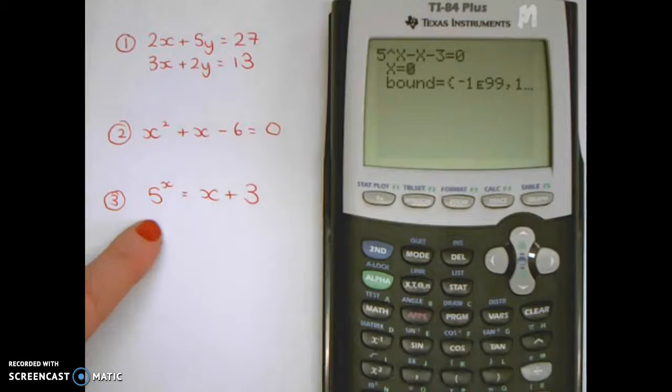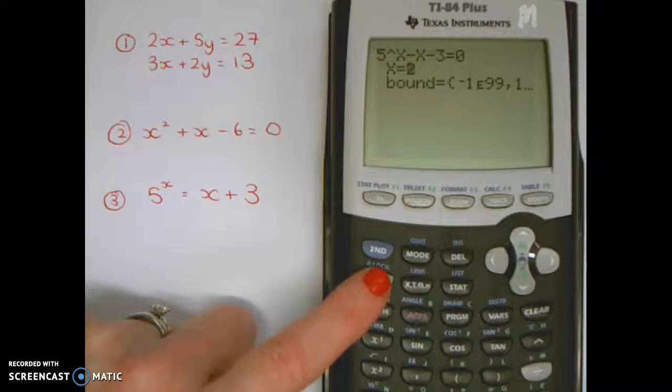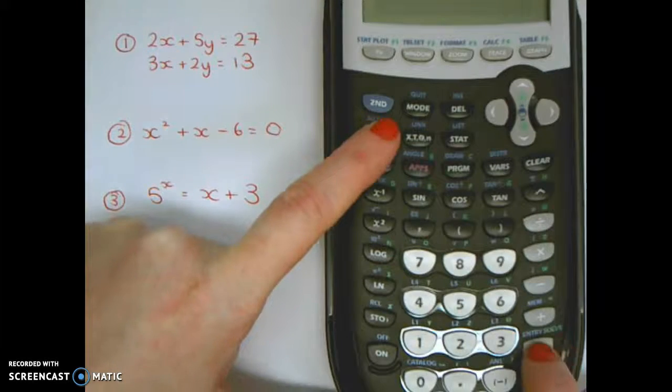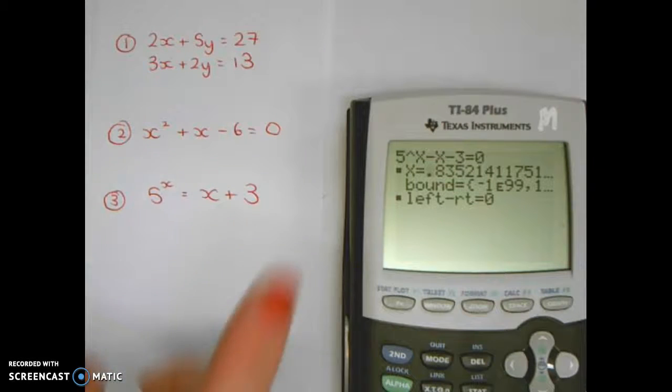It asks for a guess for the answer. Let me put in a guess of two. Then it's this value you want. Press alpha and then alpha. Down here you'll see it says solve. When you press alpha solve, it gives you x equals 0.8352.